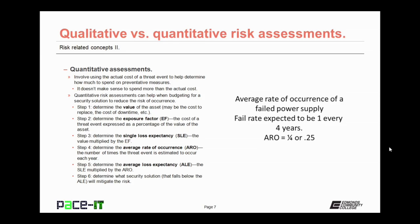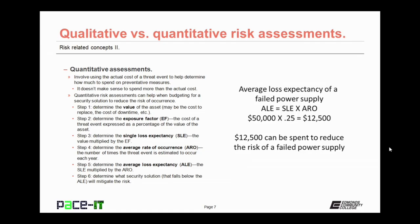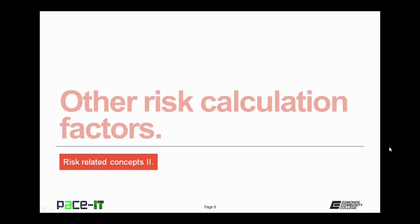Once you have the average rate of occurrence, you can determine step five: find the average loss expectancy, or ALE. The ALE equals the SLE times the ARO — the single loss expectancy times the average rate of occurrence. What this gives you is the dollar amount that your security solution should fall below. So step six is to determine which security solution that falls below the ALE will mitigate the risk of occurrence.